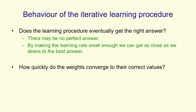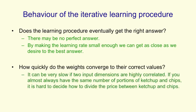Another question is how quickly do we get towards the best answer? Even for a linear system, the iterative learning can be quite slow. If two input dimensions are highly correlated, it's very hard to tell how much of the summed weight on both of those input dimensions should be attributed to each one. For example, if we always get the same number of portions of ketchup and chips, we can't decide how much of the price is due to ketchup and how much is due to chips. If they're almost always the same, it can take a long time for the learning to correctly attribute the price to each.